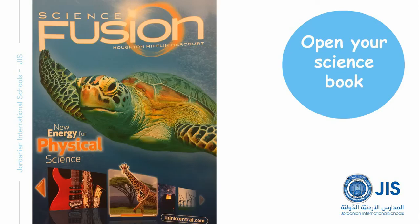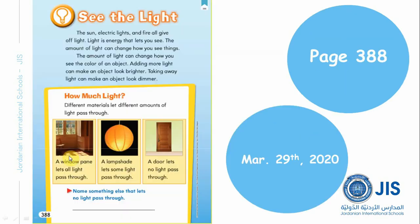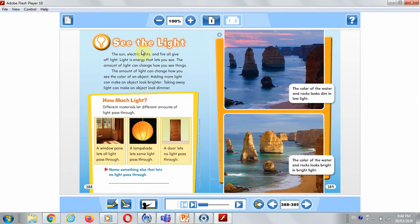Okay, now I want you to open your science book, the physical science book, on page 388. Please write the date at the top of the page. See the Light: The sun, electric lights, and fire all give off light. Light is energy that lets you see. The amount of light can change how you see things and the color of an object. Adding more light can make an object look brighter, and taking away light can make an object look dimmer.